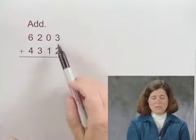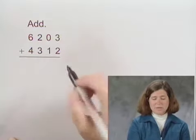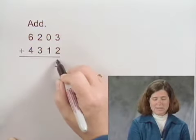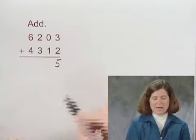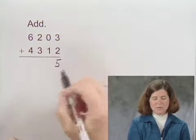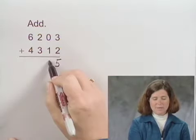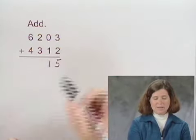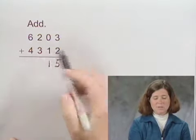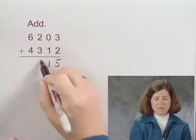We'll add three ones plus two ones — five ones. Adding the tens, zero plus one is one. Adding the hundreds, two plus three is five.